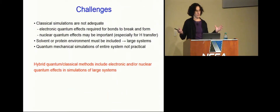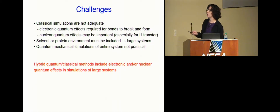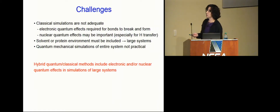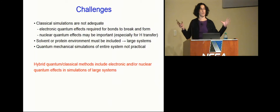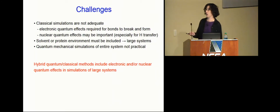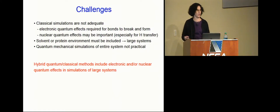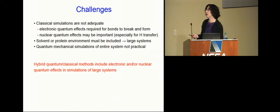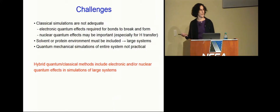To summarize the challenges: classical simulations are not adequate; we need electronic quantum effects to break and form bonds; we need nuclear quantum effects in some cases when hydrogen is transferring; and we need to include the solvent or protein environment, which means very large systems. That's why we can't do quantum mechanical simulations of the whole system — no supercomputer in the world allows that for these systems. That's why we need hybrid quantum-classical methods that include electronic and/or nuclear quantum effects in simulations of large systems.